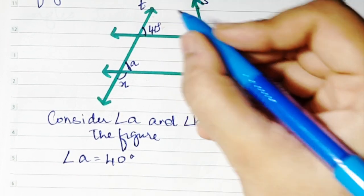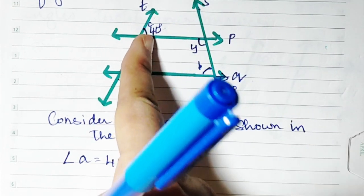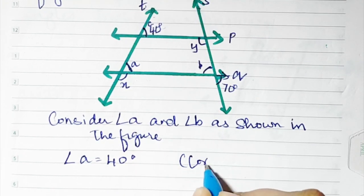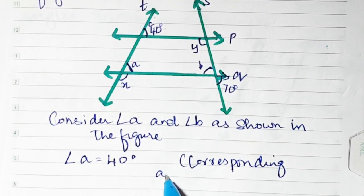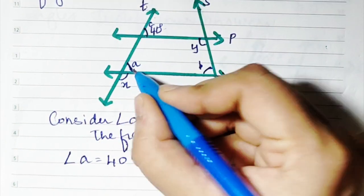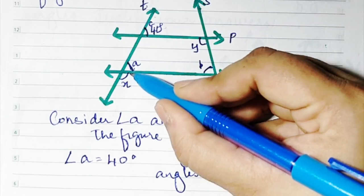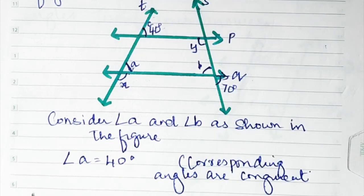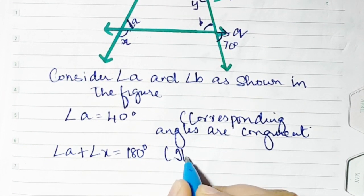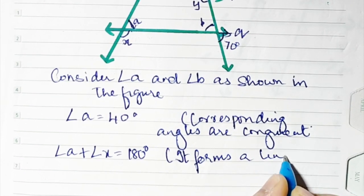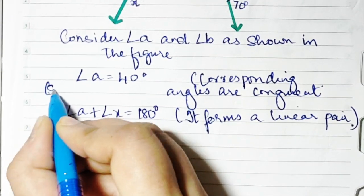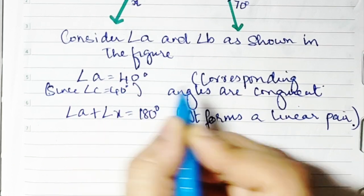We'll call this c. Angle a is equal to 40 degrees because corresponding angles are congruent. Now angle a is 40. Angle a and angle x form a linear pair, so angle a plus angle x is equal to 180 degrees because they form a linear pair.